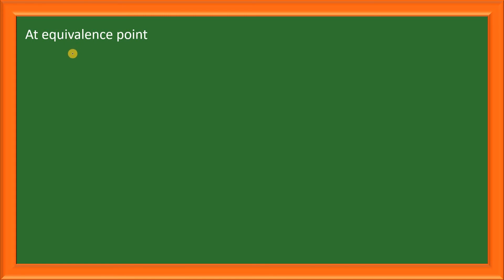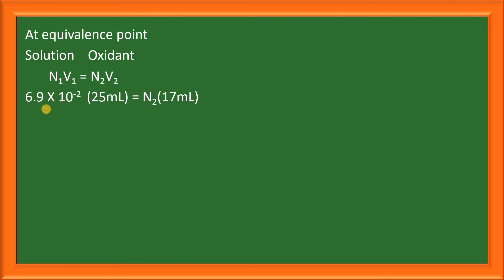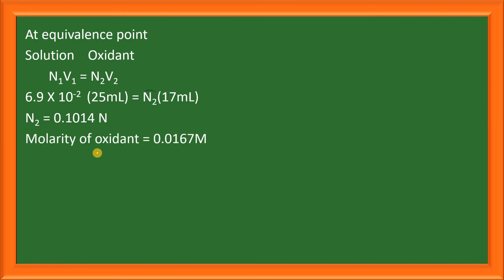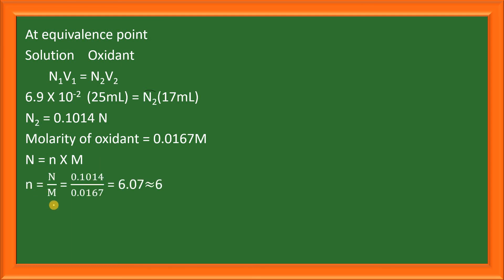At equivalence point, number of equivalents of the solution equals number of equivalents of the oxidant. Therefore N1V1 = N2V2: normality 6.9 × 10⁻² times volume 25 ml equals normality of the oxidant times volume of oxidant required. Solving this equation, normality of the oxidant is 0.1014 normal. Since molarity of the oxidant is 0.0167 molar, and normality = n-factor × molarity, n-factor equals normality divided by molarity, which comes out to be 6. The n-factor is the number of electrons transferred, which is the answer: 6.